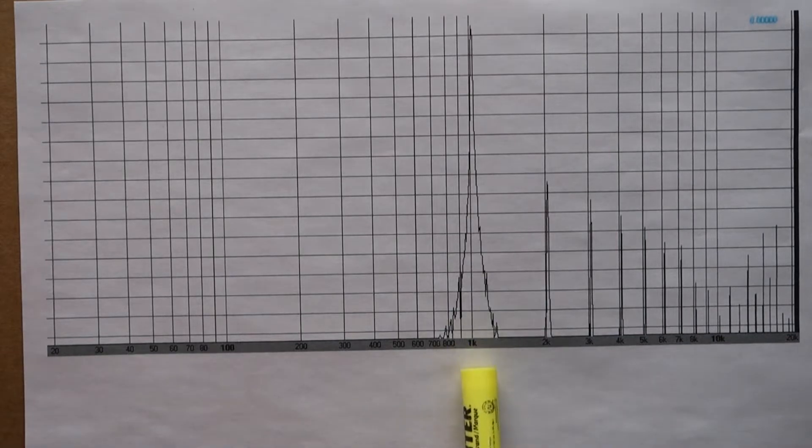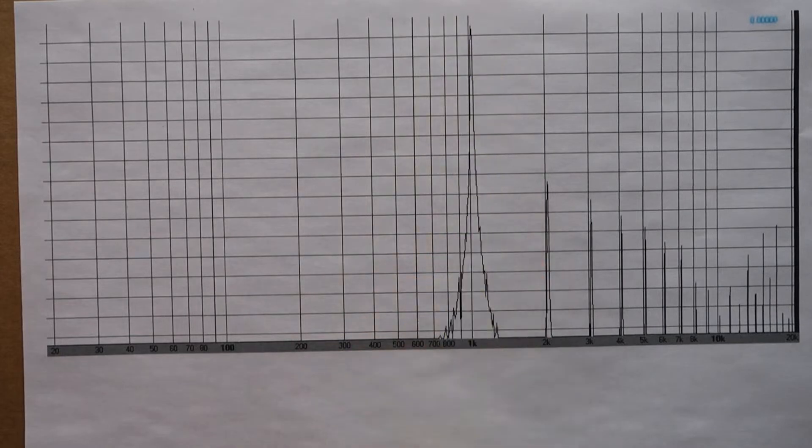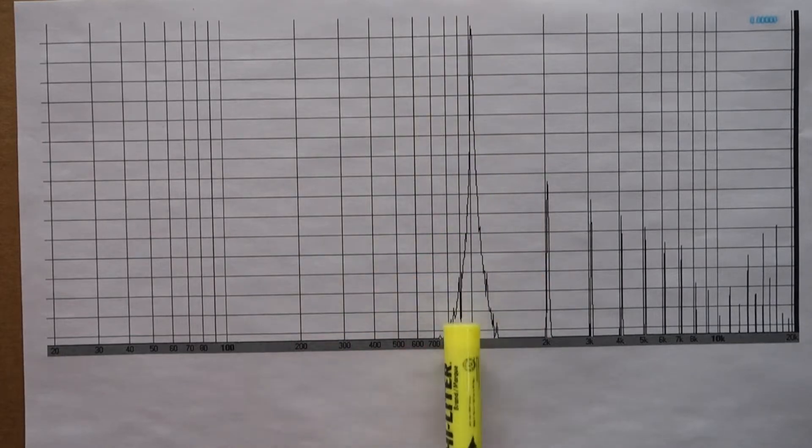So our one kilohertz sine wave which we're inputting in is fairly impure because we have harmonics at two kilohertz, three kilohertz, four kilohertz, five, six, seven, eight, nine, ten, all the way up probably past 20 kilohertz.